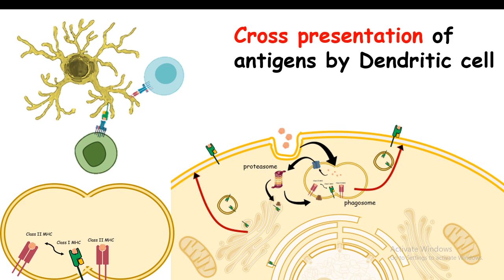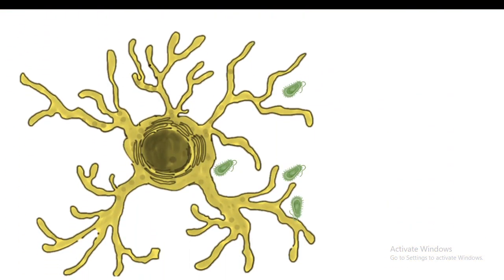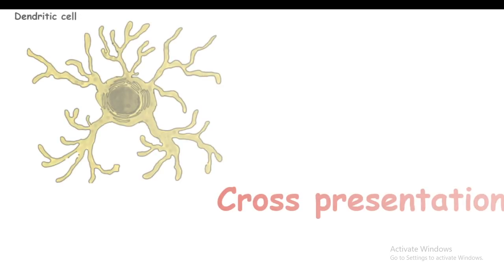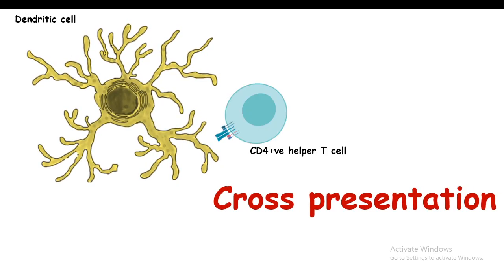This is a dendritic cell, and the dendritic cell is a professional antigen presenting cell. That means whether we have antigens present from a bacteria or virus, the dendritic cell would try to phagocytose those pathogens, take their antigens inside, and ultimately present the antigen on top of a class 2 MHC molecule, which is presented to CD4 helper T cells.